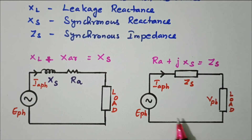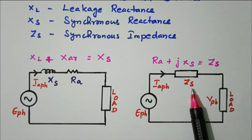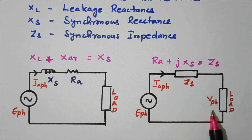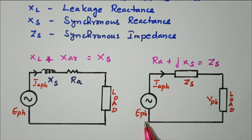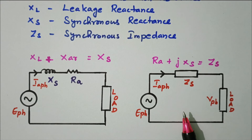This is the final equivalent circuit: E-phase, then IA-phase, then synchronous impedance, then V-phase — the voltage across the load. E-phase is nothing but V-phase plus the drop. That is the voltage equation. Now we'll see the voltage equation based on this equivalent circuit.